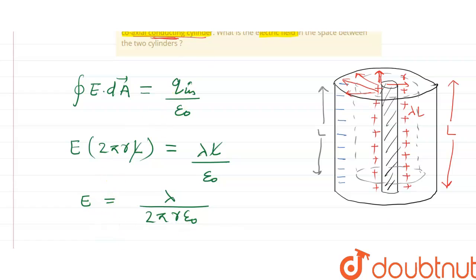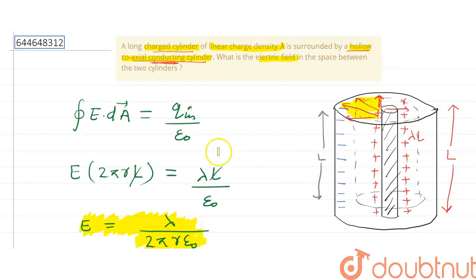This is the value of electric field that is required in the question. So this is the electric field which is between the long charged cylinder and the hollow coaxial cylinder. That's all for the question. Thanks for watching.